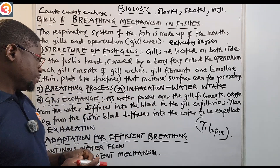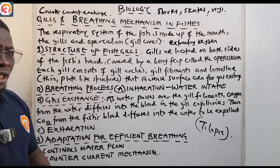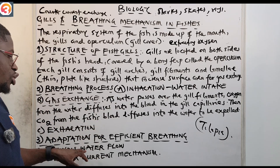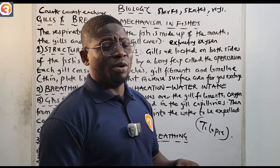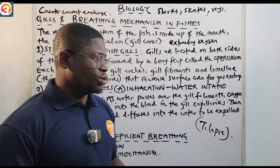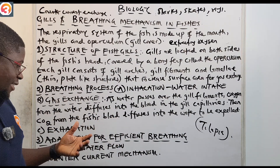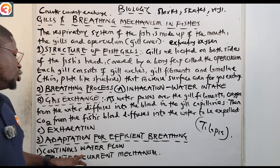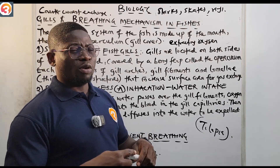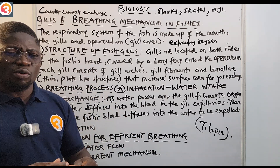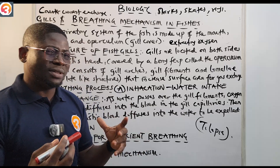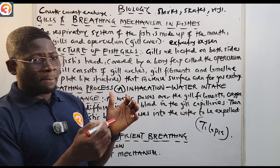There are two adaptations for efficient breathing in fish. Number one is continuous water flow — most fishes like sharks swim with their mouth open, allowing water to flow efficiently over the gills. Number two is the counter-current mechanism, which allows for efficient gaseous exchange and maximizes oxygen absorption.